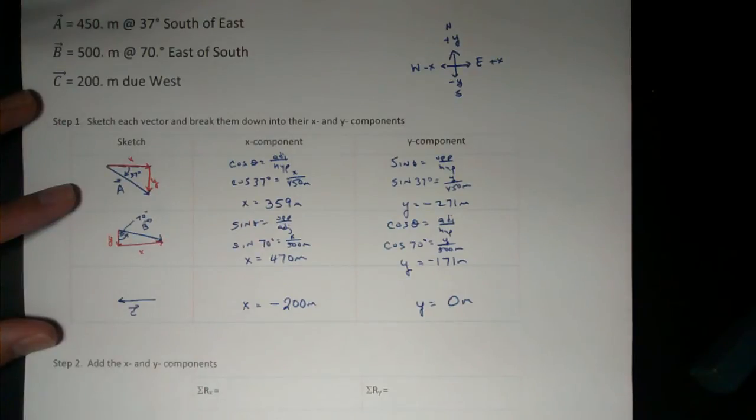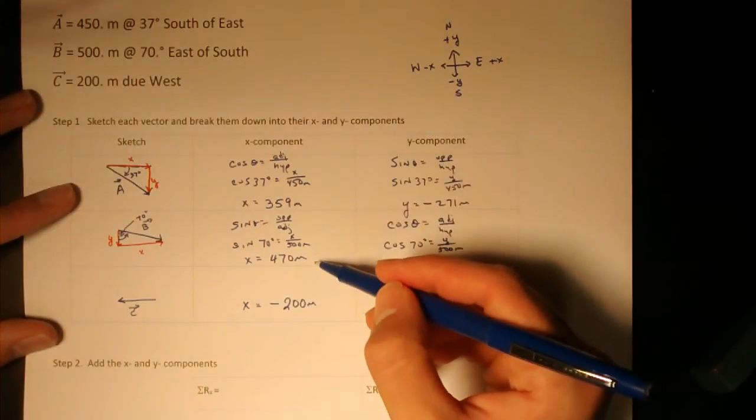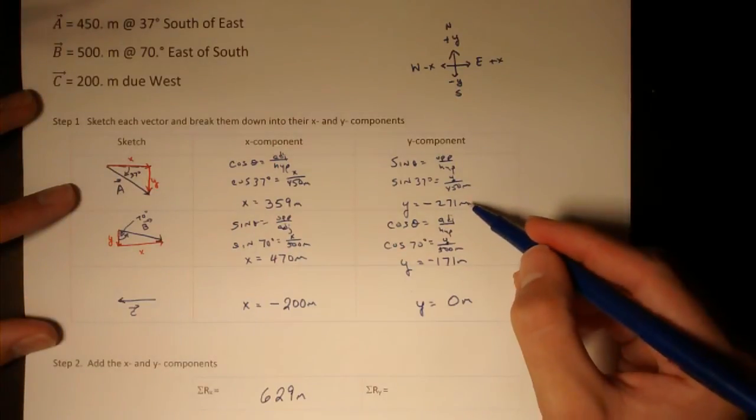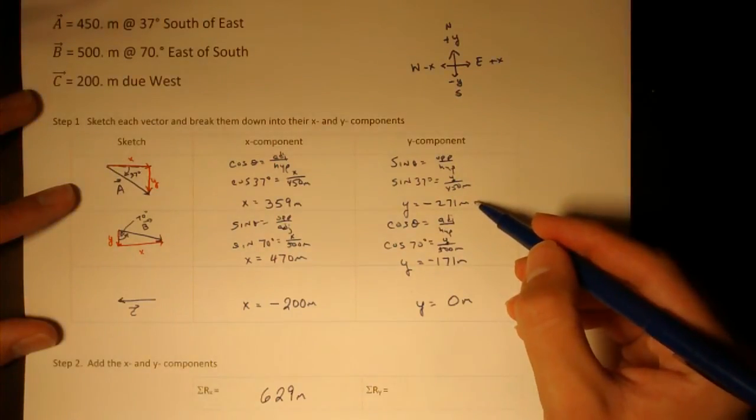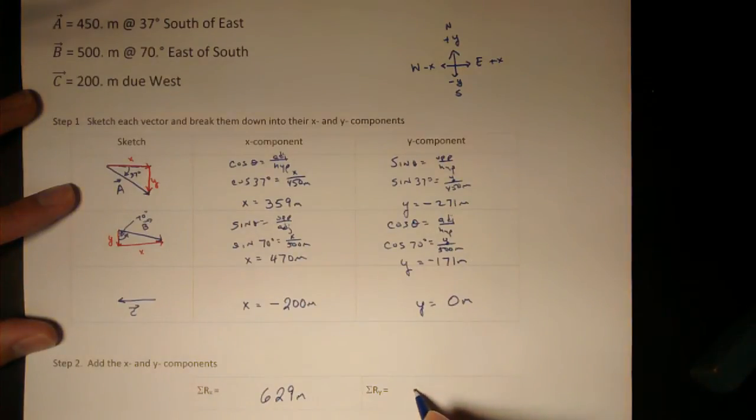Step two is to add up the x and y components. All of the x components, 359 plus 470 minus 200 gives me 629 meters. For the y components, negative 271 meters minus 171 meters gives me negative 442 meters.